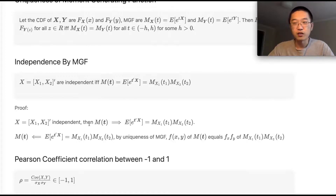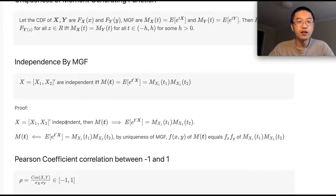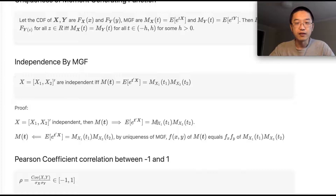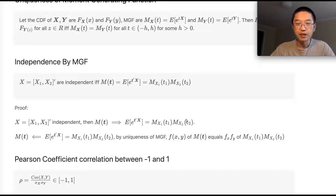This can be easily proven without much advanced measure theory. For the first direction: if X and Y are independent, then the PDF can be written separately. So when you write down the formula for the moment generating function of X₁ and X₂, the terms can be separated and you get the product of individual moment generating functions.